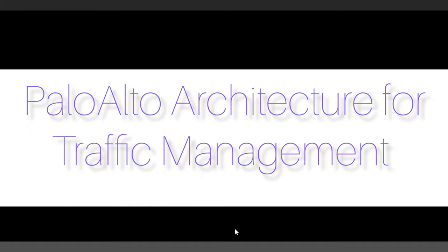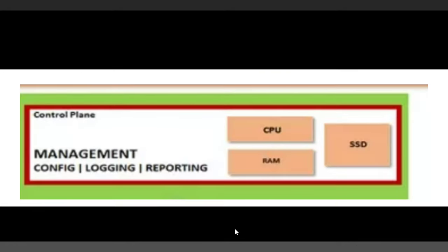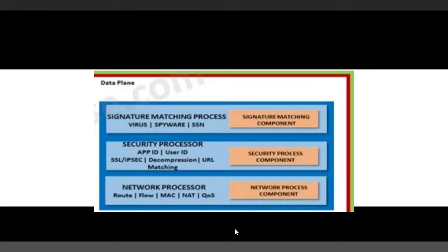Palo Alto architecture for traffic management divides traffic into two planes: the management plane and the data plane. This applies to both physical and virtual firewalls. This separation of planes means each has dedicated network resources — CPU, RAM, and storage — making them independent of each other. The control plane provides management features like firewall configuration, login, and reporting. The data plane provides signature matching, security processing, and network processing.